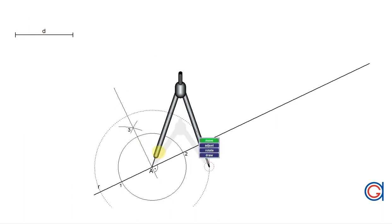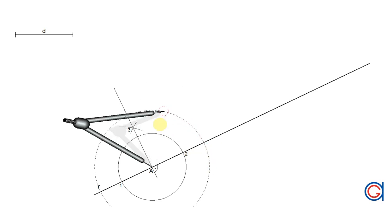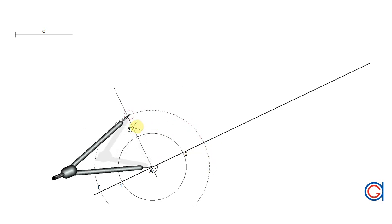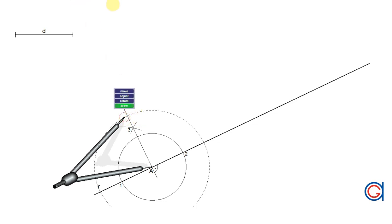The next step, setting our compass to the given distance D and setting our compass on point A we scribe an arc until it cuts the perpendicular line at a new point which we will call B.